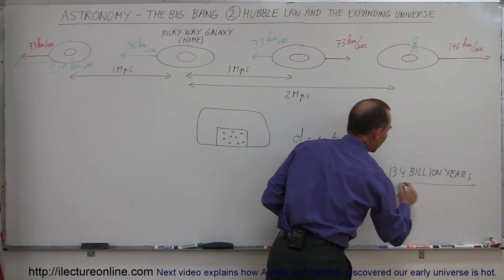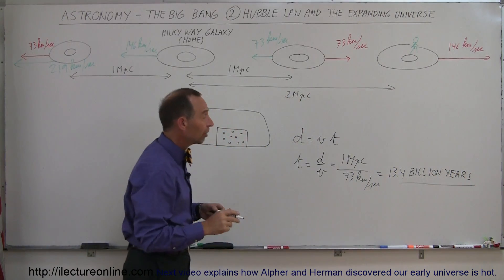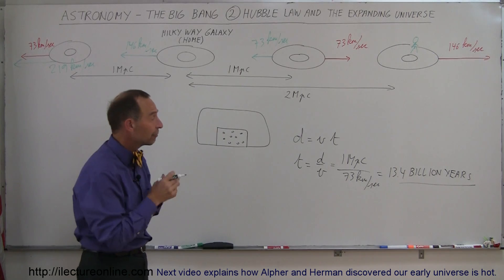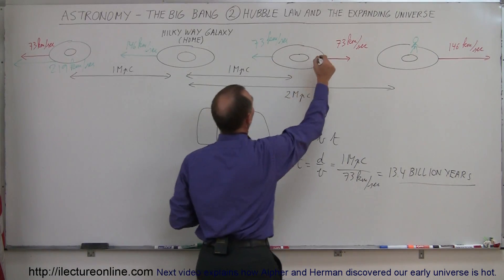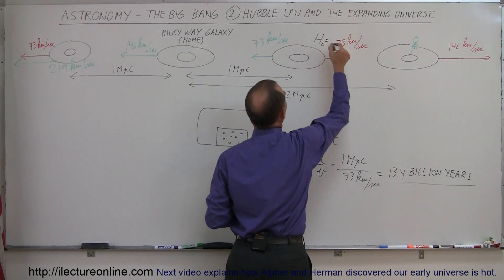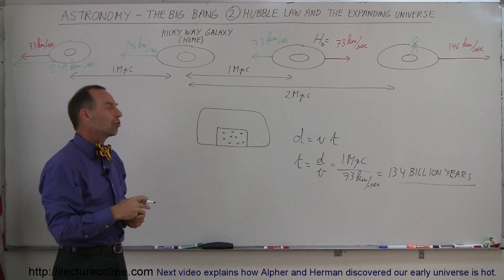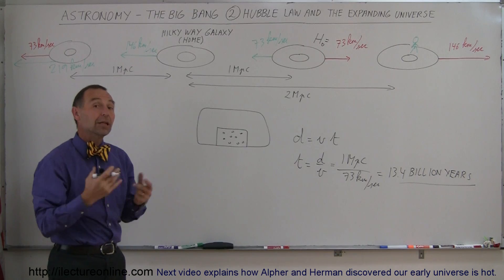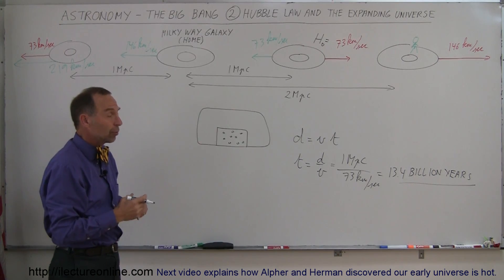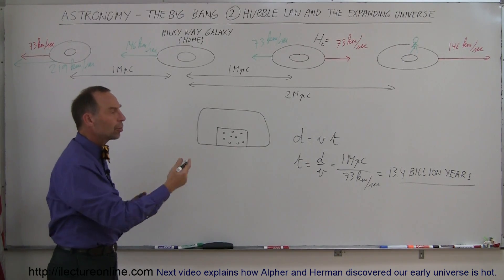And so the early estimates, after we used the Hubble Space Telescope to come up with an accurate value for Hubble constant, H sub nought, the age of the universe ended up fluctuating. Actually, it used to be less than that. The initial estimates with the Hubble Space Telescope was 12.8. Now it's up to 13.4.